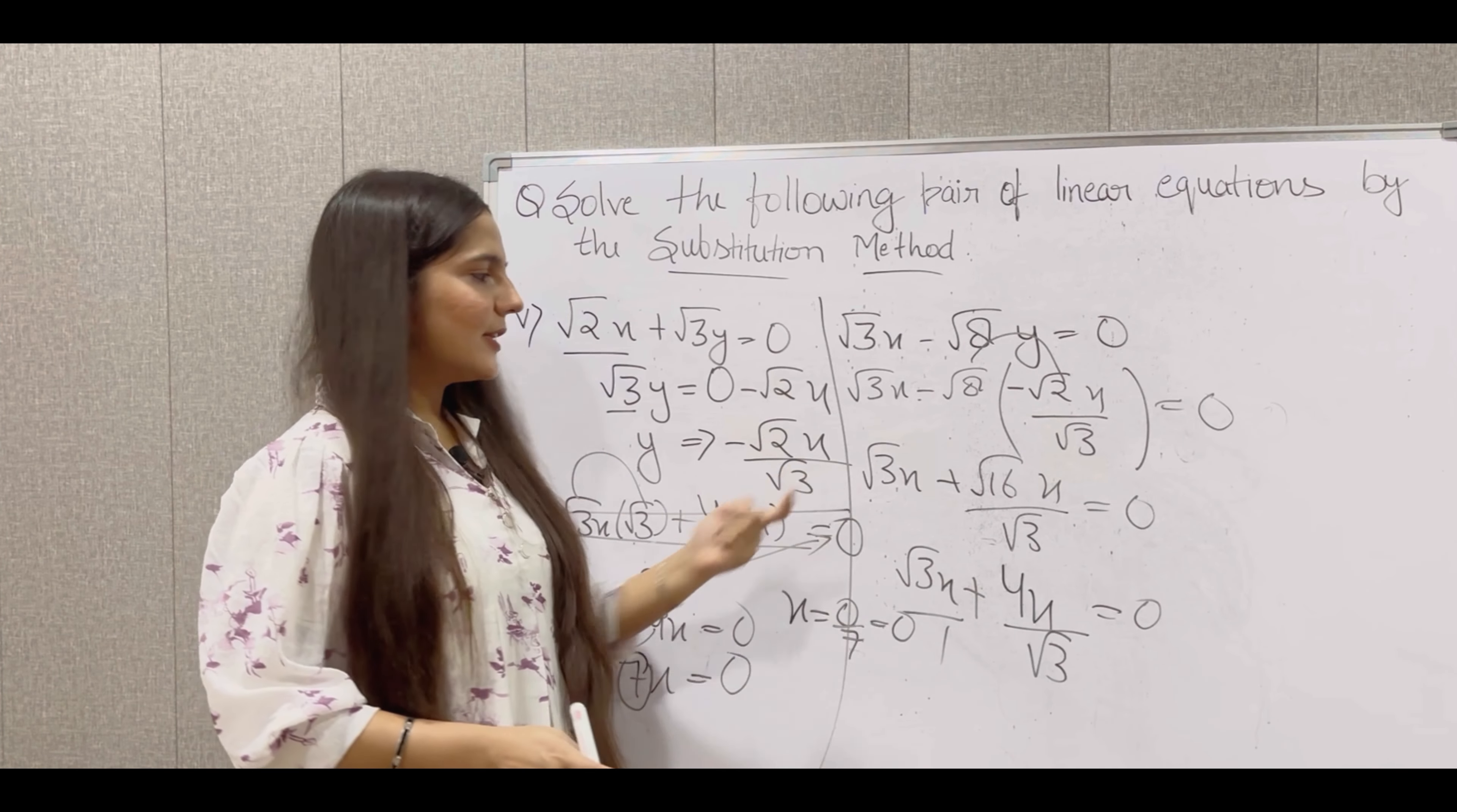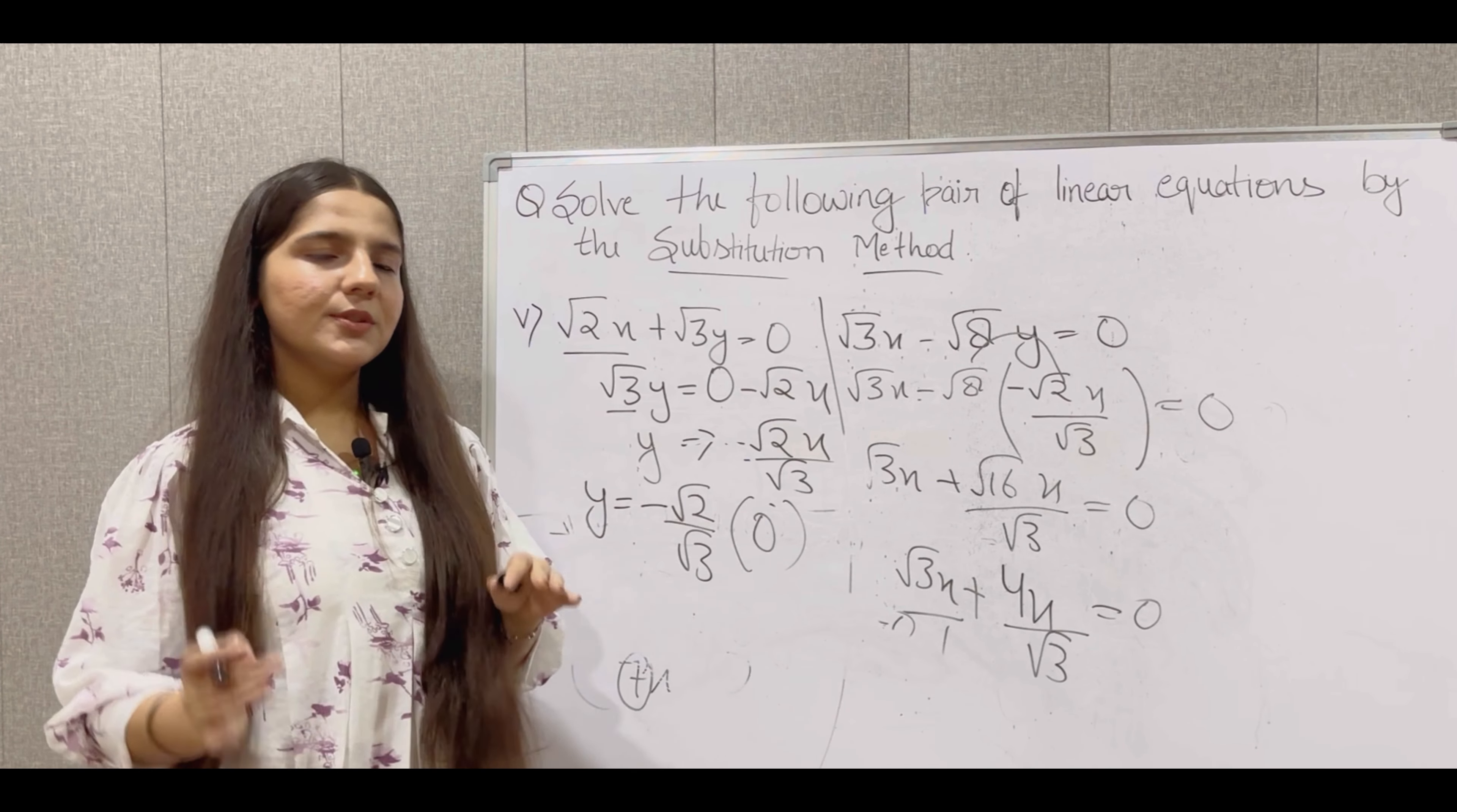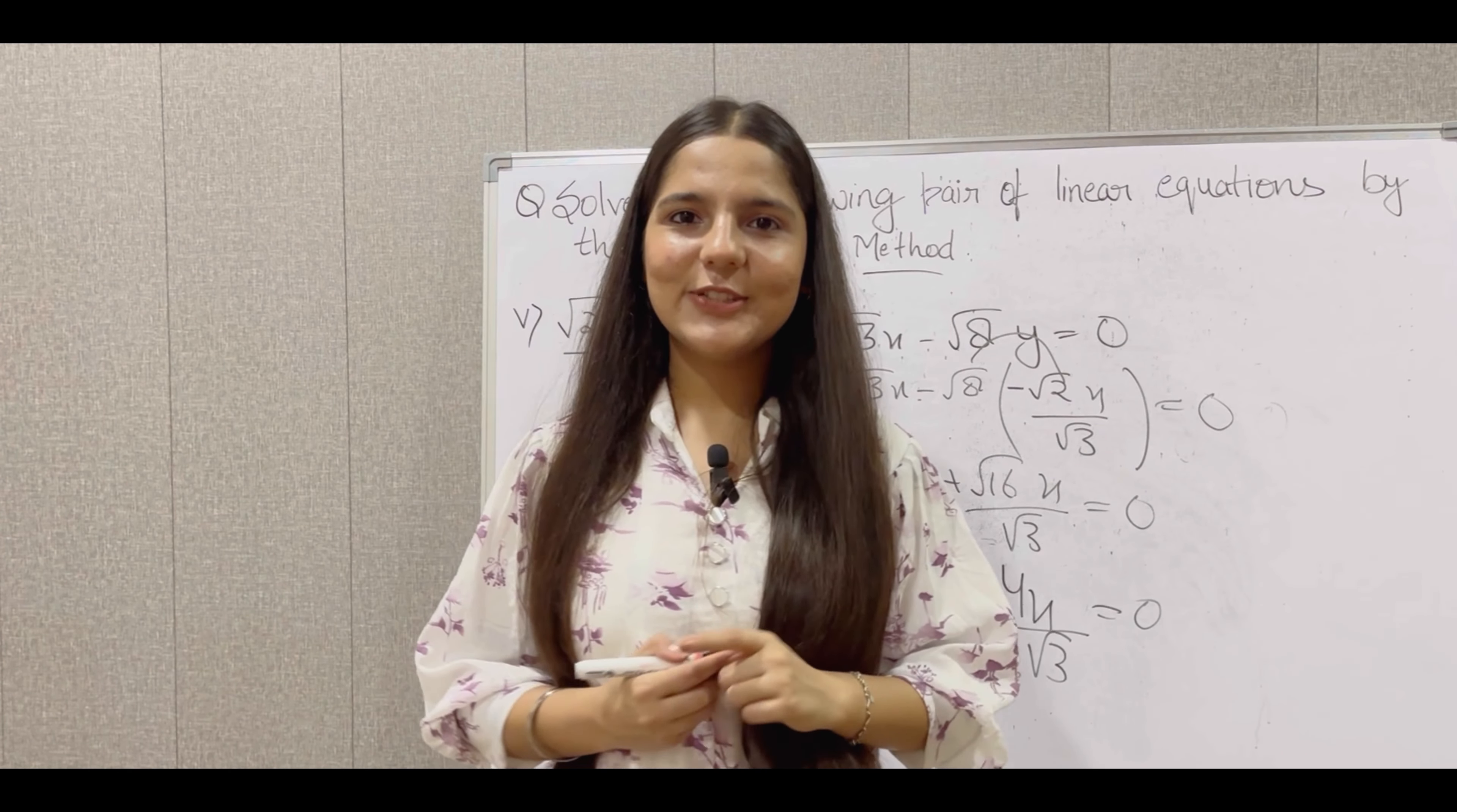Y's value, here we will put x's value. So y is equal to minus root 2 upon root 3 multiplied with 0. So any value multiplied with 0 gives 0. So y's value is also 0, and x's value is also 0.